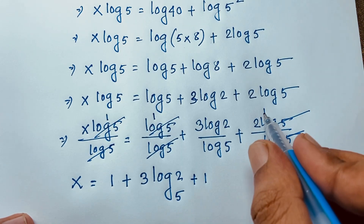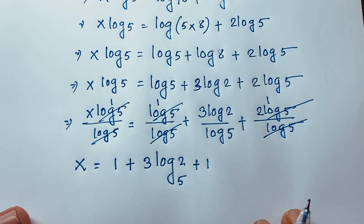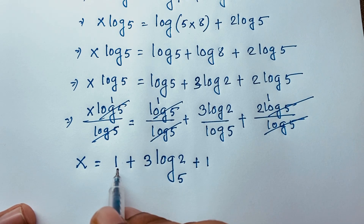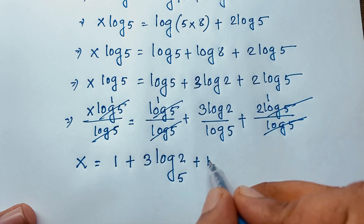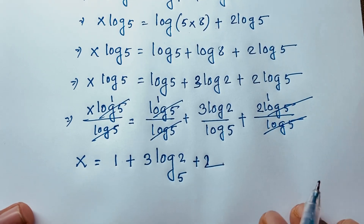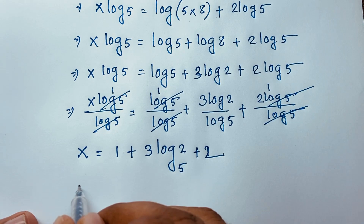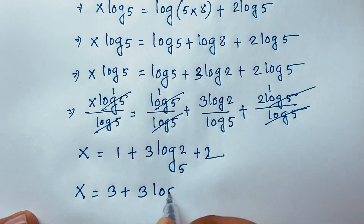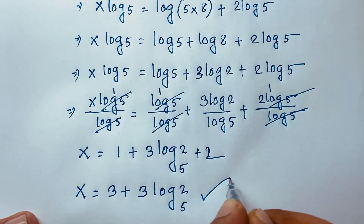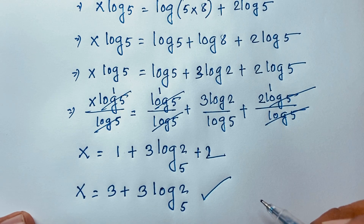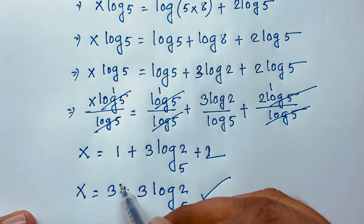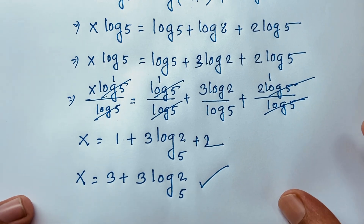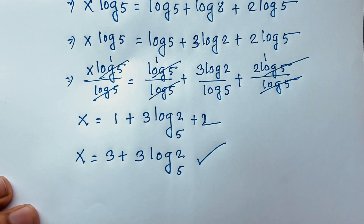Simplifying, the two 1s give 2, and 2 plus 1 equals 3. So x is equal to 3 plus 3 log₅2. This is the value of x in this exponential math problem. Now let's check our answer by substituting back into the original question.